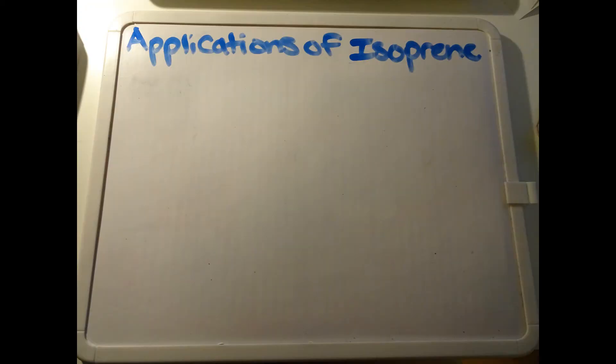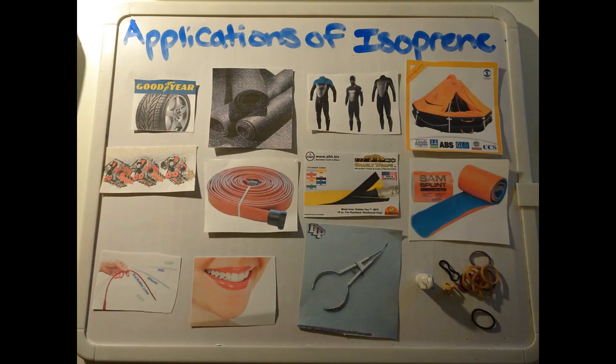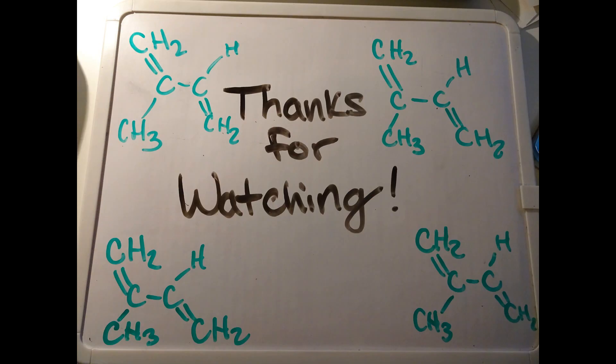With all of the research done on the product, there are many applications for the isoprene polymer, such as tires, floors, wetsuits, life rafts, engines, hoses, cable coatings, splints, catheters, forceps, fillings in teeth and gums, erasers, and of course, rubber bands. Rubber revolutionized the way that we do many things in our lives, and the world would not be the place it is today without it. Thanks for watching!